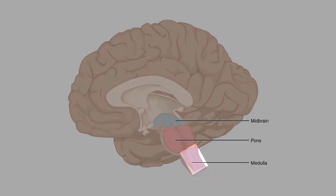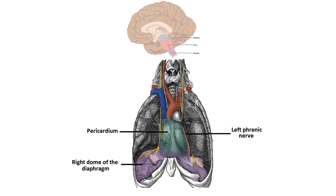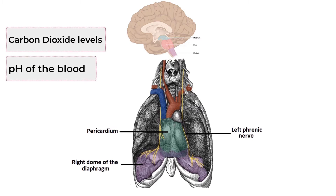In the brainstem, both the pons and the medulla oblongata respond to chemical feedback to determine if respiratory rate needs to increase or decrease. In response to this feedback, the medulla oblongata has direct control over how frequently the phrenic nerve stimulates the diaphragm to contract. The chemical feedback to the brainstem is based on three factors: carbon dioxide levels in the blood, pH of the blood, and oxygen levels in the blood.